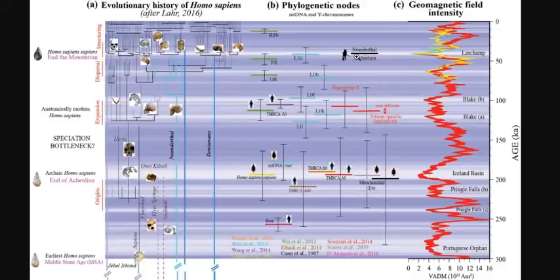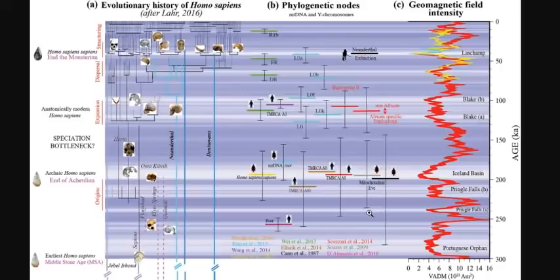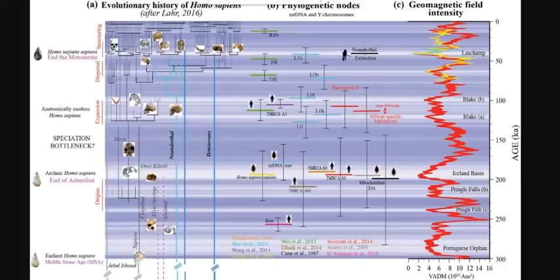The Laschamp excursion saw field intensity go very low and the Neanderthals went extinct. Neanderthals were not the only hominids to go extinct — there were many other lineages, including versions of Homo sapiens that flourished afterward and many that ended. At the Iceland Basin extinction event, other fauna also ended at these excursion events. So not only do we have mass extinction due to field intensity shifts, but we have speciation — the beginning of new species — meaning magnetic field excursions cause extinctions and speciation simultaneously.